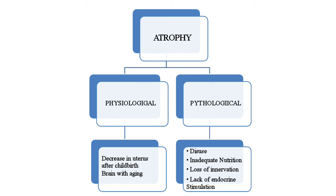Atrophy mein physiological aur pathological causes hote hain. Physiological mein hoga: decrease in uterus after childbirth, brain with aging. Pathological mein: tissue disuse, inadequate nutrition, loss of innervation, aur lack of endocrine stimulation — agar hormones sahi tarah kaam na karein ya nutrition sahi na mile to atrophy ho sakti hai.